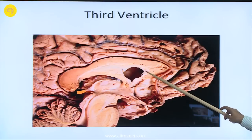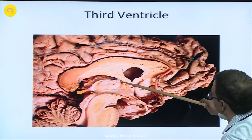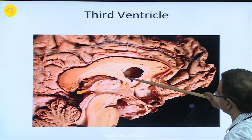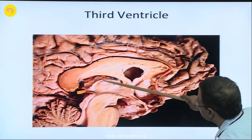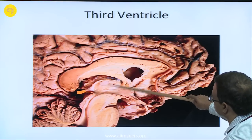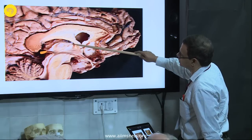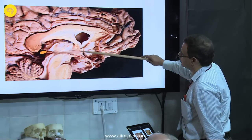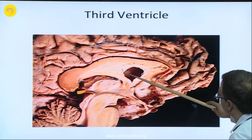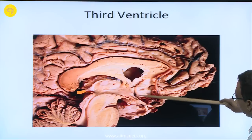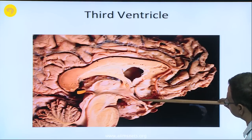The third ventricle is what you see here. The septum pellucidum has been opened to show part of the lateral ventricle. Here is the third ventricular area; the lateral wall of the third ventricle is mostly formed by the thalamus and part of the hypothalamus. Anatomically we show the different walls of the third ventricle — the anterior wall is formed by the lamina terminalis.